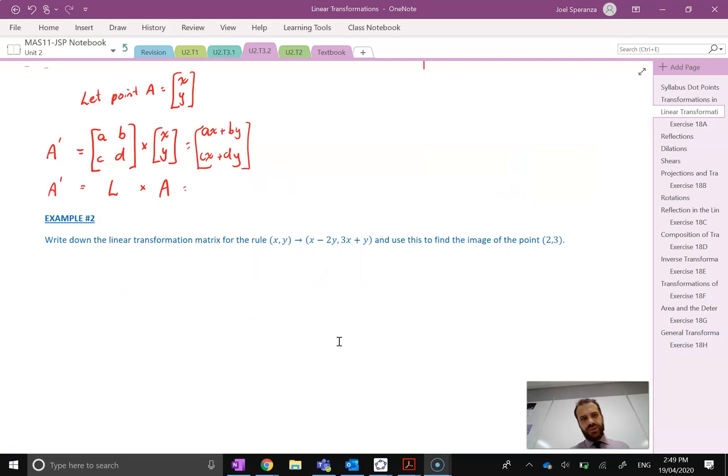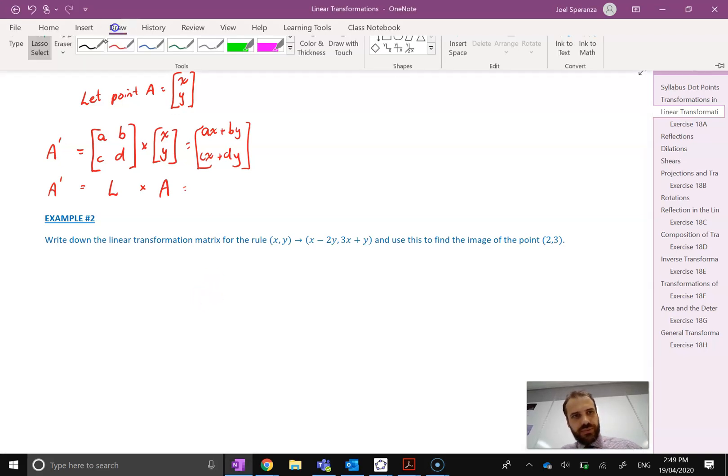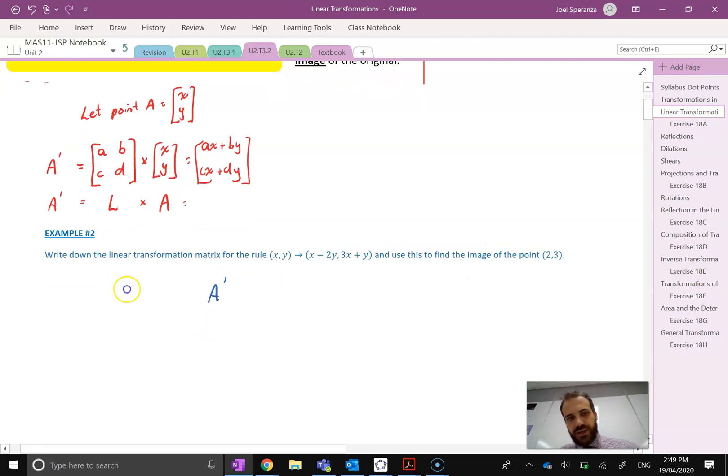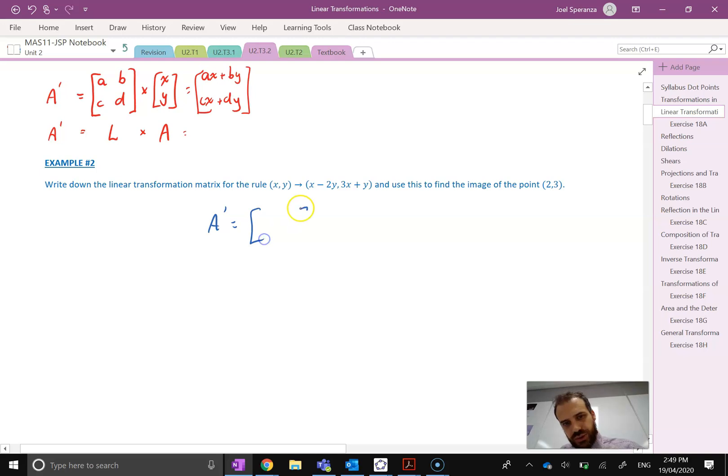We can do an example of this. Write down the linear transformation matrix for the rule (x,y) transforms to (x - 2y, 3x + y), and use this to find the image of the point (2,3). So the transformation rule is going to be: the transformed image is going to be equal to our matrix [1, -2; 3, 1]. We're multiplying it just by [x, y]. There's our linear transformation rule.